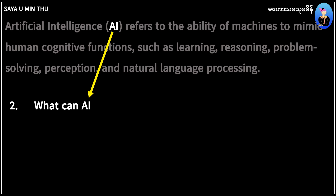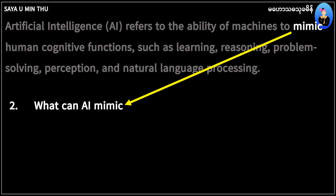What can — 'can' is the auxiliary verb. 'Can' can be a subject auxiliary. This is the main verb. The main verb is in the infinitive form. The main verb is 'to mimic.' What can AI do? AI is to mimic — AI can mimic.